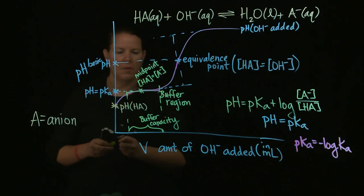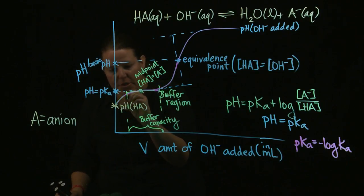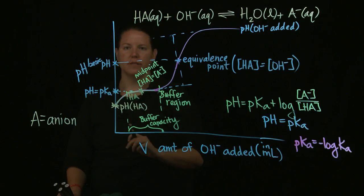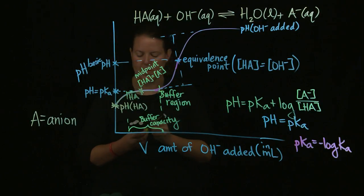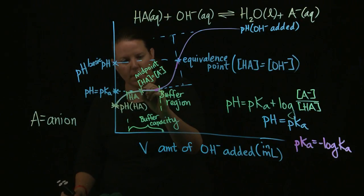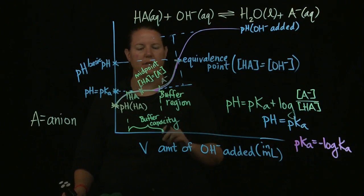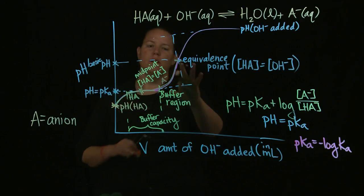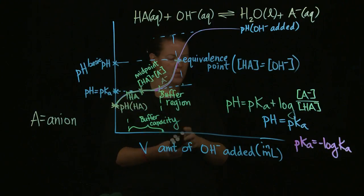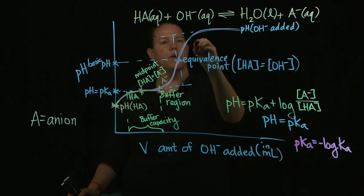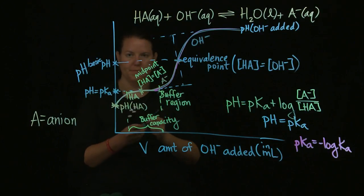In terms of this, between the beginning pH and the midpoint, so between here and here, your predominant entity is the acid, the acid you started off with. Between the midpoint and the equivalence point, your predominant entity is its conjugate base. Because if they were equal here, then the conjugate base takes over. And then, from the equivalence point on, your predominant entity is the base you added.